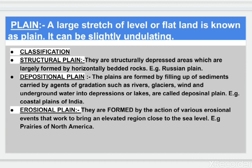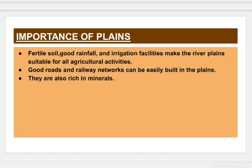Next, depositional plains. These plains are formed by filling up of sediments carried by agents of gradation such as rivers, glaciers, wind, and underground water into depressions and/or lakes. For example, coastal plains of India. Erosional plains are formed by the action of various erosional processes that work to bring an elevated region close to sea level. For example, the prairies of North America.